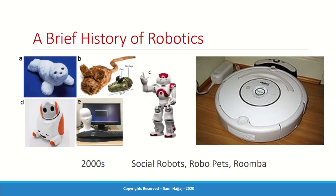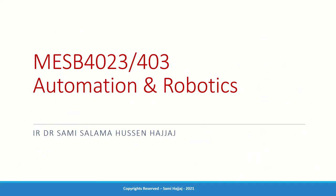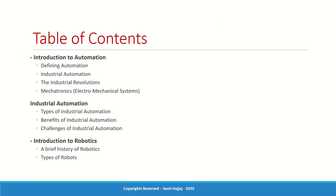That completes the first session. To recap what we covered today: we talked about automation in general, industrial automation, the concept and types of industrial automation, its benefits and challenges, and we talked about robotics in general, their types, and the history of robots. In the next session, we will focus more on industrial robotics — delving deeper into industrial robots, their different types, components, applications, and where they're being used. Until the next session, thank you very much. Take care.